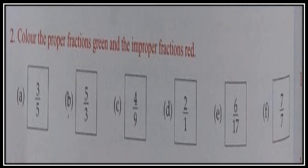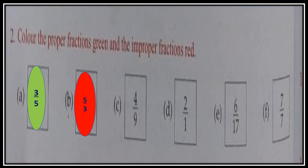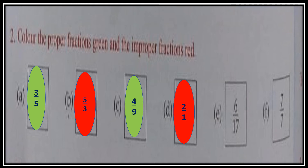Now color the proper fractions with green and the improper fractions with red. Proper fractions have a smaller numerator compared to the denominator; improper fractions have a bigger numerator. 3 upon 5: numerator is smaller, so proper fraction — color green. 5 upon 3: numerator is bigger, so improper — color red. 4 upon 9: proper fraction — color green. 2 upon 1: numerator is bigger — improper fraction. 6 upon 17: proper fraction. 7 upon 7: numerator equals denominator — improper fraction.